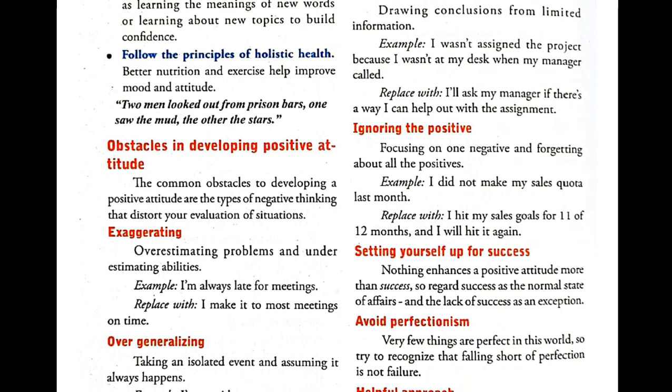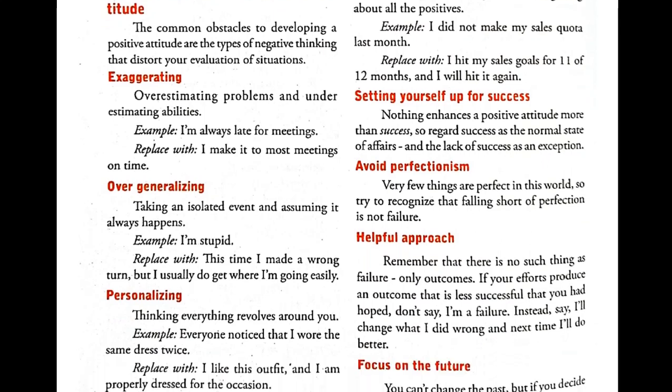Avoid perfectionism. No one is perfect — people are continuously learning new things. If you want to become a perfectionist, you should have that capacity to learn; you should learn new things constantly, and only then do you become more perfect. But even when you reach your level of perfection, there are other people who can surpass you, meaning they are more perfect. So we should learn more things daily. Try to recognize that falling short of perfection is not a failure. Grab every opportunity and find new things to learn.